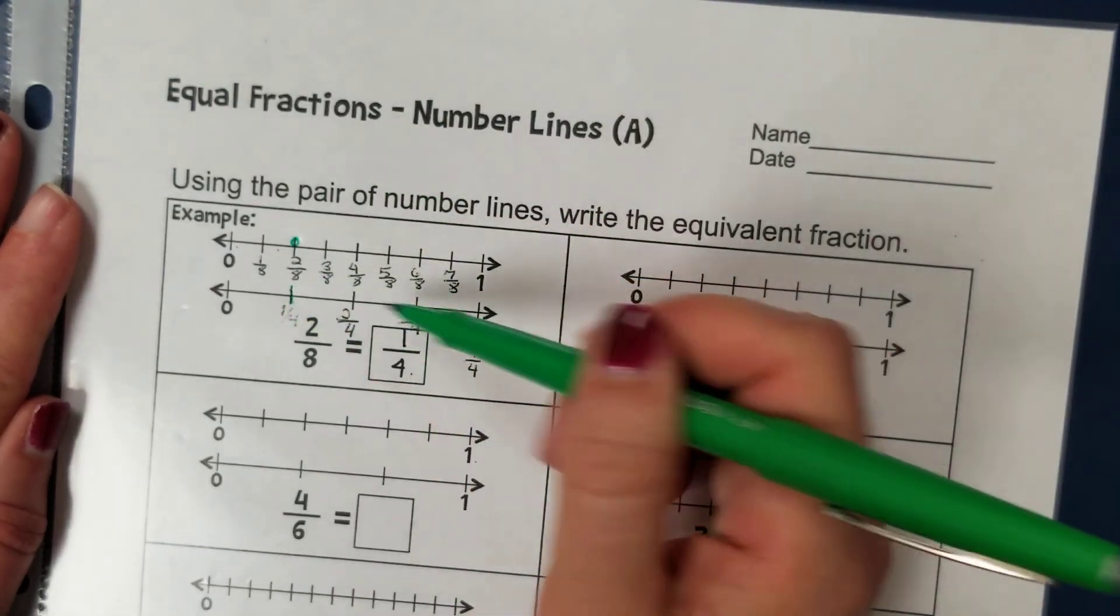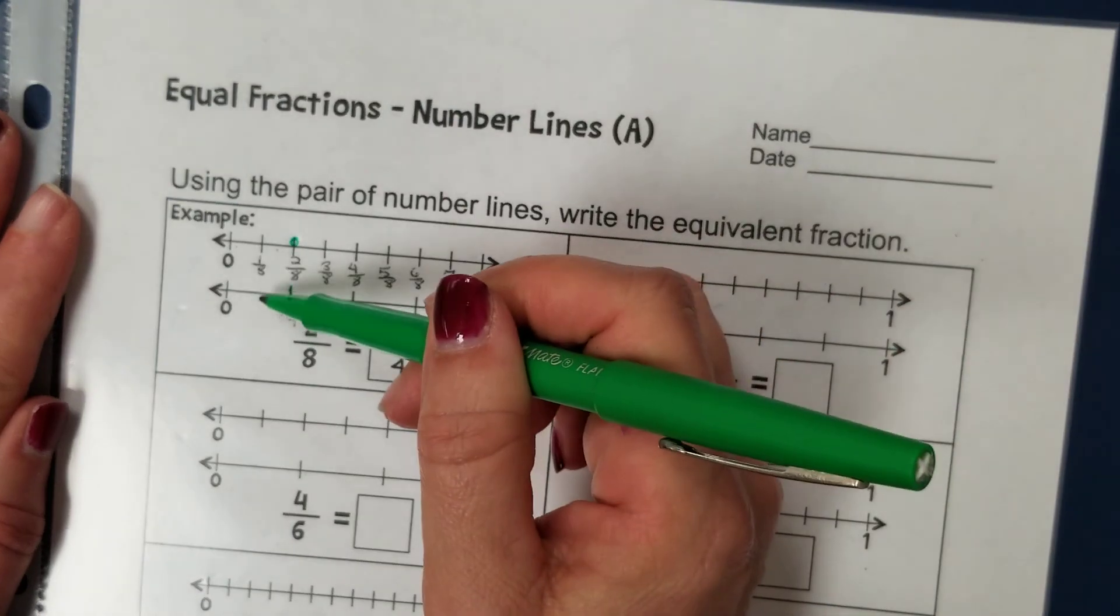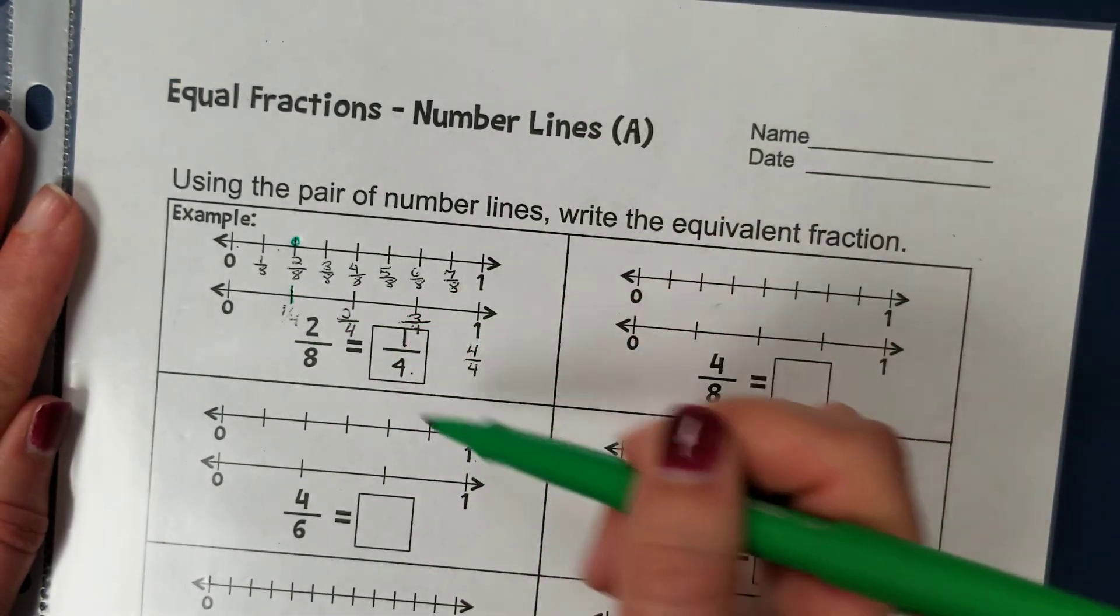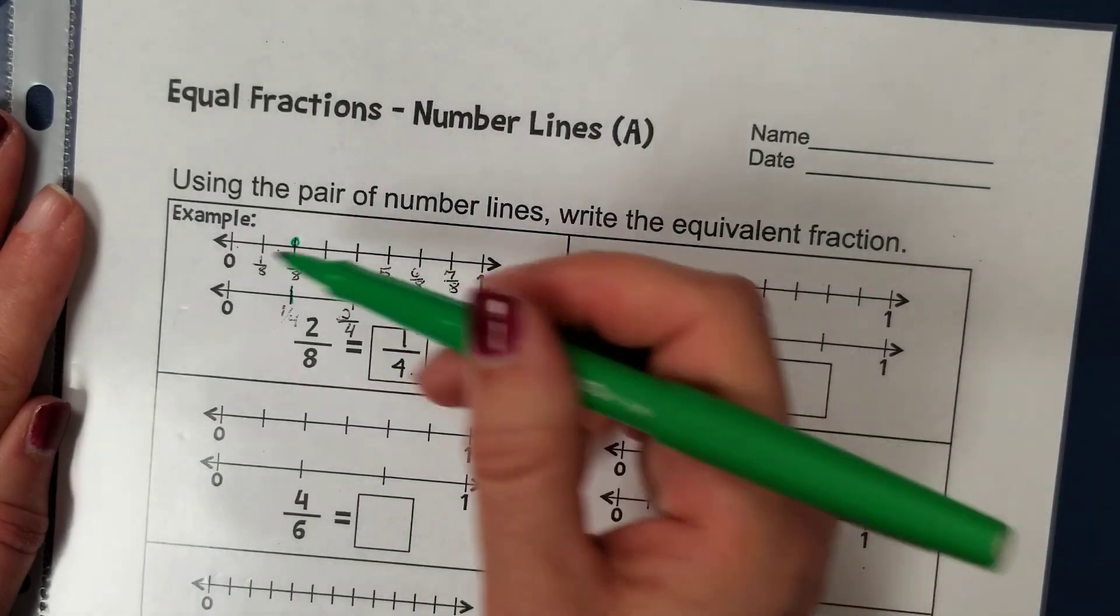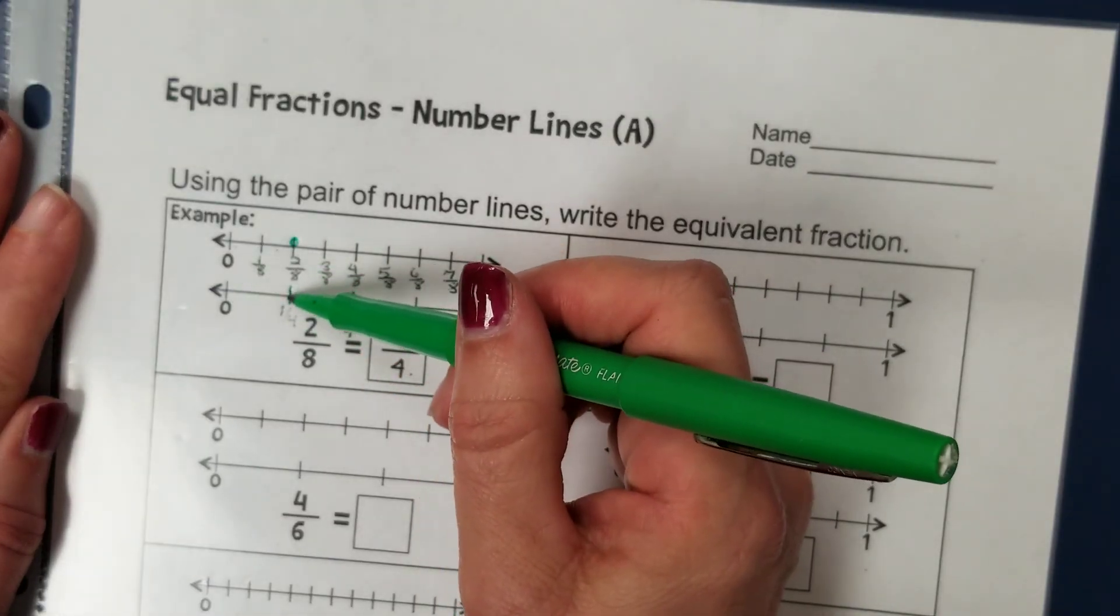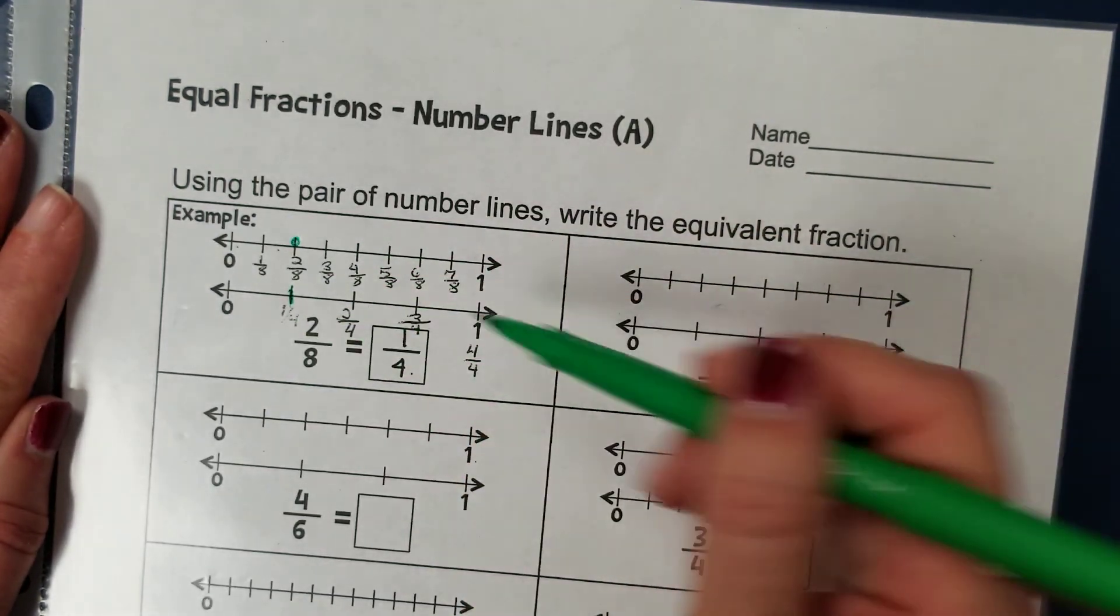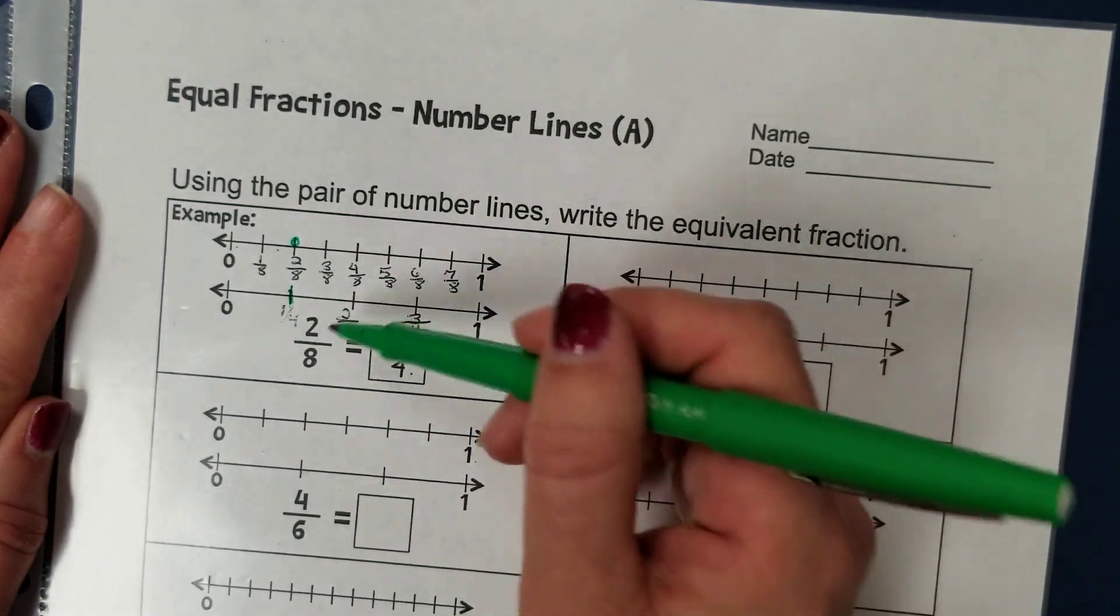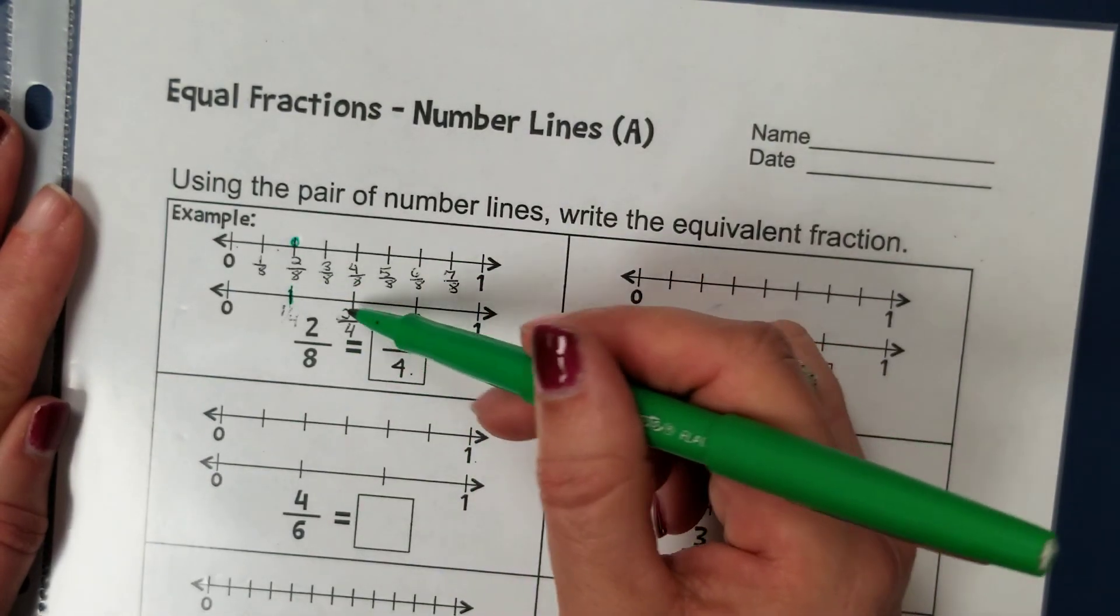I'm going to count the number of parts between zero and one that this is divided equally into. One, two, three, four parts. So they put a four down on the bottom. And the one comes because it is the first section, the first one-fourth on this number line. So two-eighths is equivalent to one-fourth.